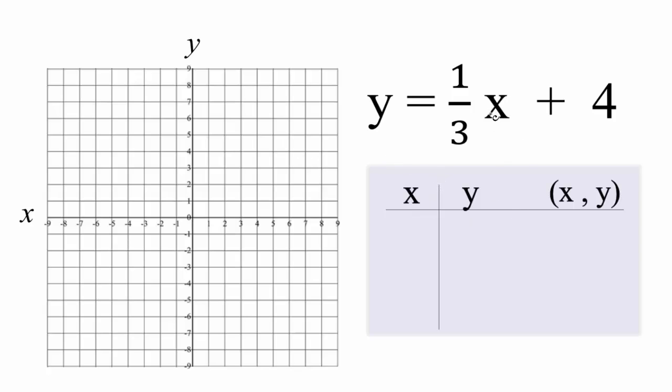So let's start out with this x here. Let's put three in for x, because if I put three in for x, one-third times three, that'll give me one. One plus four is five.